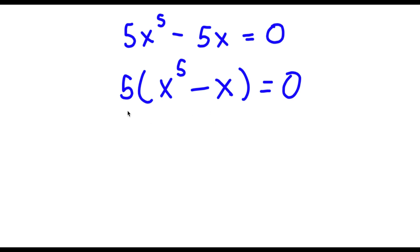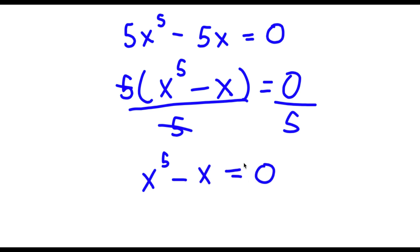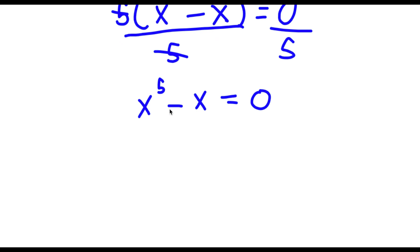Now I'm going to divide both sides by 5. This way we can simply get rid of this 5, and it would be much easier to solve this equation. So now these 5s are both going to cancel out, and 0 divided by 5 is simply 0. So now I'm left with x to the power of 5 minus x is equal to 0. From here, I can go ahead and factor out x, giving me x times x to the power of 4 minus 1 is equal to 0.